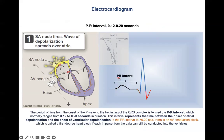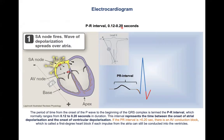We also have the PR interval. It represents the time between the onset of atrial depolarization and the onset of ventricular depolarization. Normally, the PR interval is about 0.12 to 0.2 seconds. If it is prolonged, this may indicate pathologies such as AV conduction block, which will be discussed in a separate video.